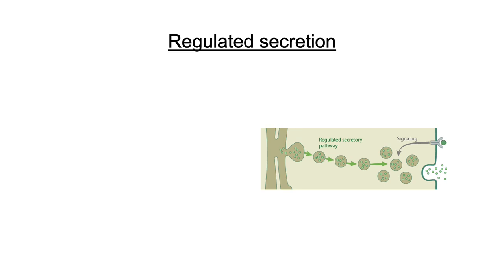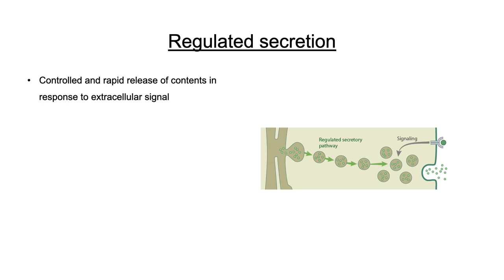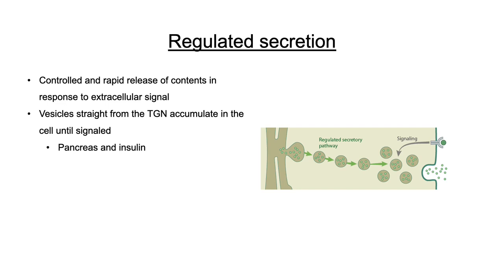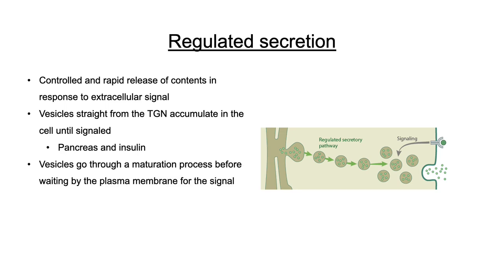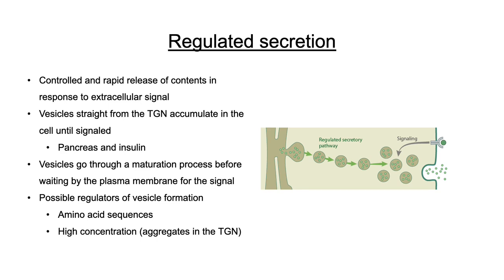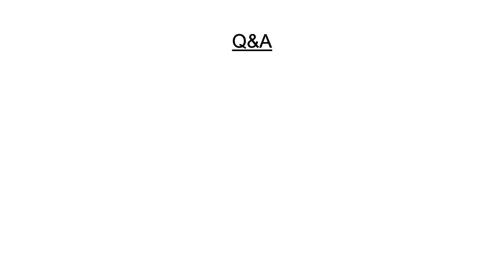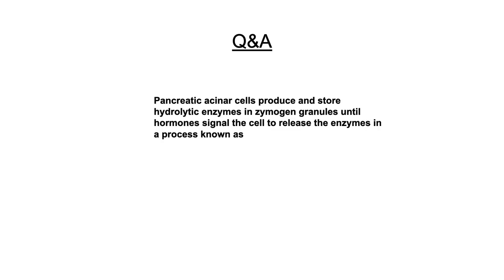The next method is regulated secretion, which is controlled rapid release in response to extracellular signals. Vesicles straight from the TGN accumulate in the cell until signaled — such signals are found in the pancreas for insulin secretion. Vesicles go through a maturation process before waiting by the plasma membrane for the signal, with aggregation forming of vesicles and their contents. Possible regulators of vesicle formation include amino acid sequences, high concentration aggregates in the TGN, and pH.